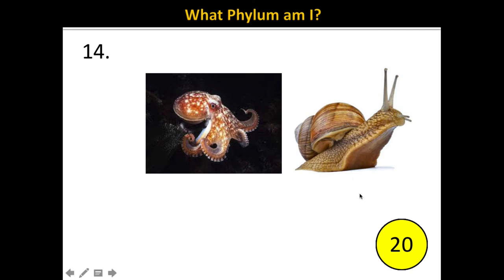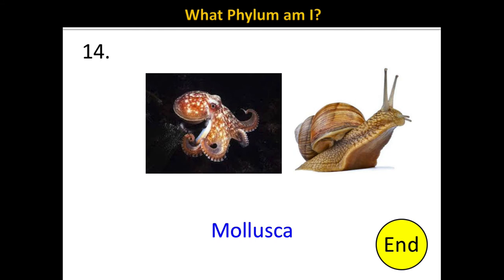Number 14. The correct answer is Mollusca. Remember, examples of molluscs include things like clams, snails, slugs, and octopuses. Remember that not all molluscs have a shell; however, they all have a special tissue called a mantle.